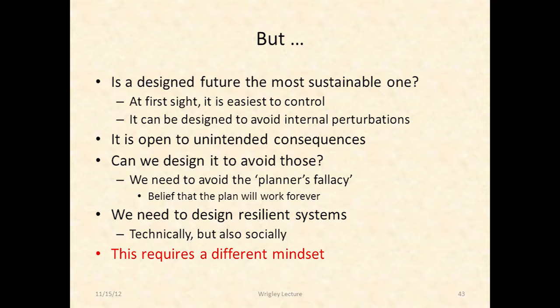The question becomes: if you start saying we have to design a future — which, as Michael Crow always says, is the easiest way to control that future — is that really true from this perspective? I would argue that it isn't really, because even if you design, there will always be unintended consequences.